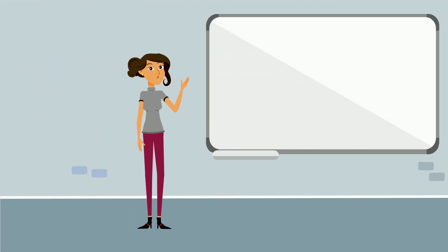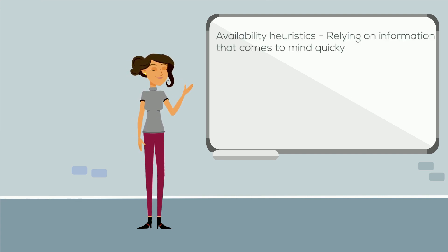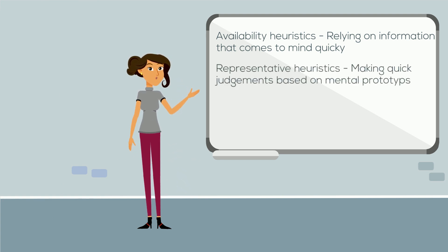There are different types of heuristics. First, availability heuristics which is basically relying on information that comes to mind quickly. Second, representative heuristic, making quick judgments based on mental prototypes. And lastly, affect heuristics.